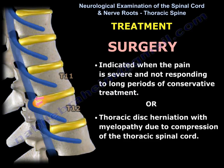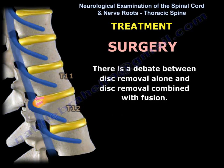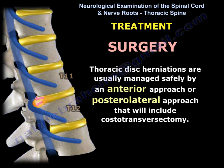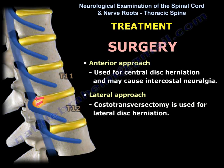Surgery is indicated when pain is severe and not responding to long periods of conservative treatment, or when there is thoracic disc herniation with myelopathy due to compression of the thoracic spinal cord. There is debate between disc removal alone versus disc removal combined with fusion. Posterior laminectomy and disc excision had the highest rate of neurological deficit. Thoracic disc herniations are usually managed safely by an anterior approach or posterolateral approach. The anterior approach is used for central disc herniation and may cause intercostal neuralgia, while the lateral or costotransversectomy is used for lateral disc herniation.